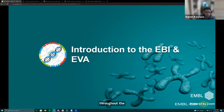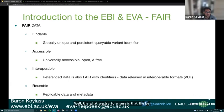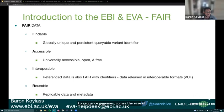Starting with a brief introduction to the EBI and EVA: we are a FAIR primary resource at the EBI. The biological data being generated now is at large scale — we're moving into a big age of genomic and variation data. With the ease of sequencing genomes comes the ease of analyzing variants, though variant data can be quite complex. This big data needs to be archived, sorted, and made available.